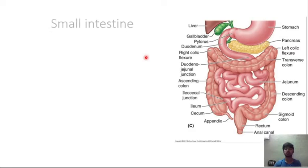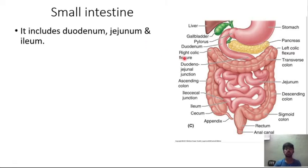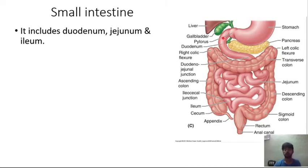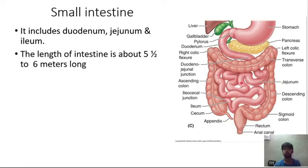The small intestine includes the duodenum, jejunum, and ileum. The total length of the small intestine is about 5 to 6 meters. The jejunum begins at the duodenojejunal flexure and continues as the ileum.